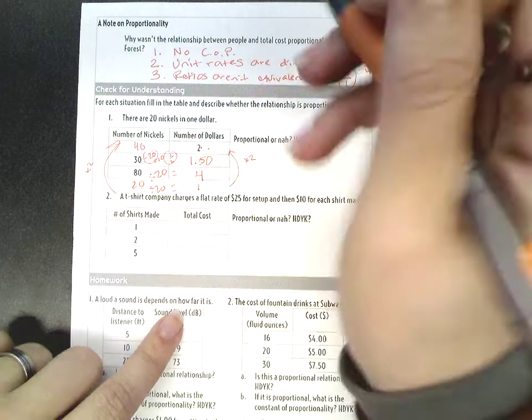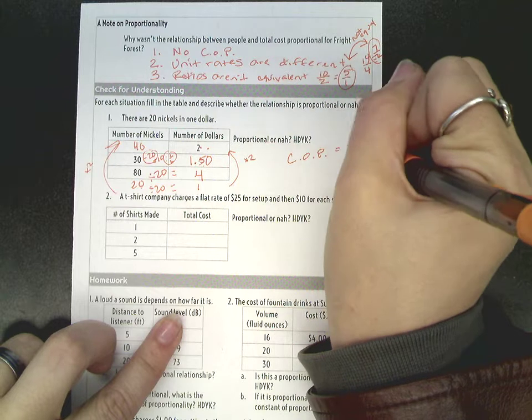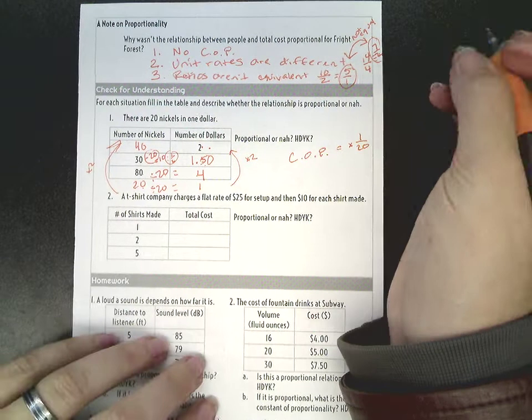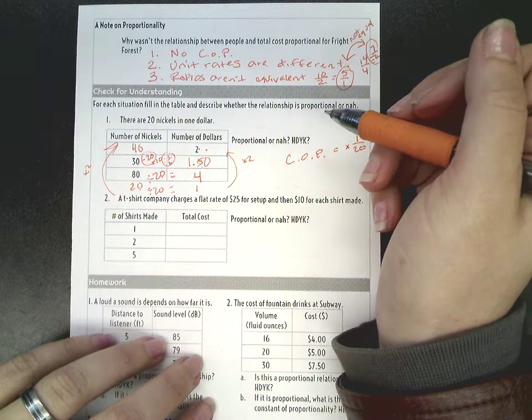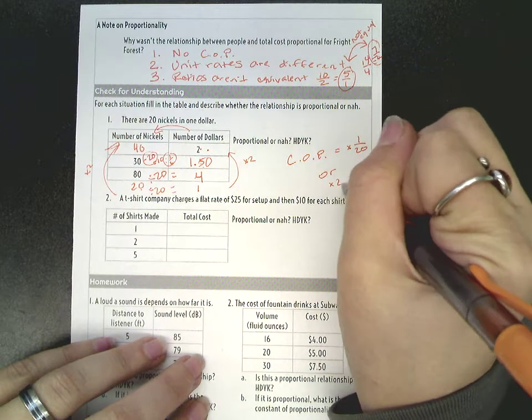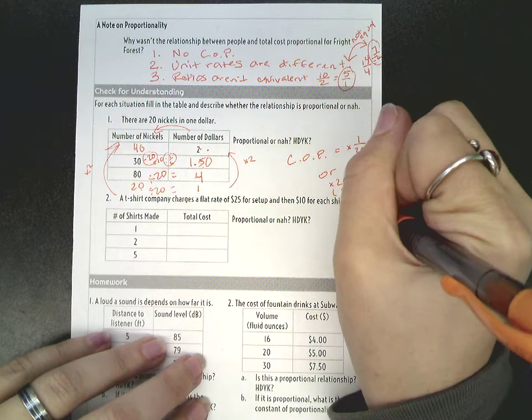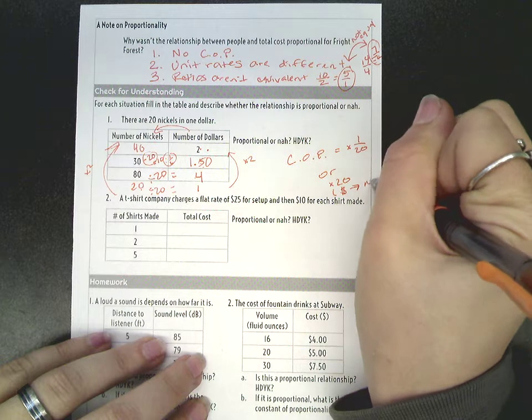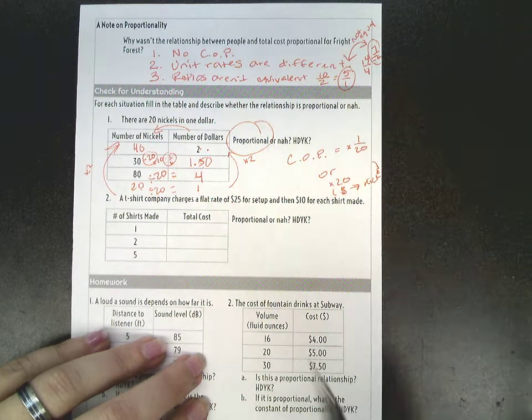So yes, there is. A constant of proportionality could be times 1 over 20, since that's the same as dividing by 20. Or, in the other direction, times 20, which would be dollars to nickels. So this is proportional.